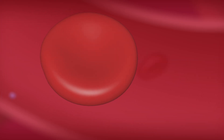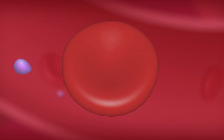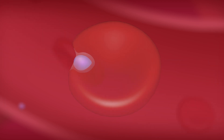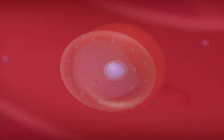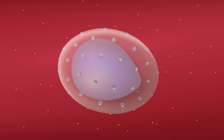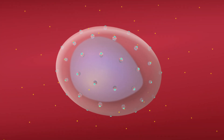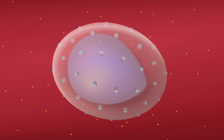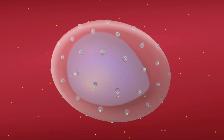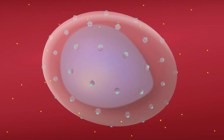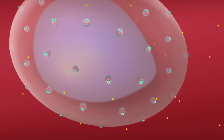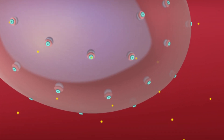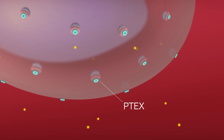During this process, the outer membrane of the red blood cell folds inwards to form a sac called a vacuole around the parasite. From within this vacuole, the parasite makes and transports hundreds of proteins out into the red blood cell to remodel its new home. These hundreds of proteins pass through a gatekeeper in the vacuole membrane called PTEX.